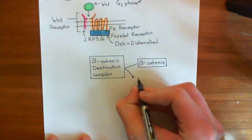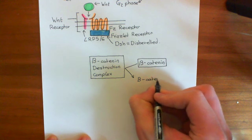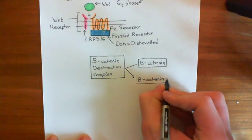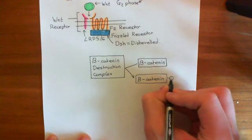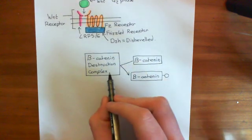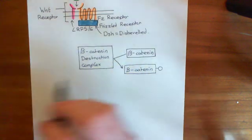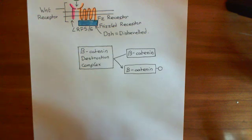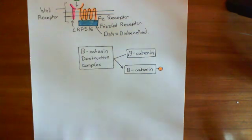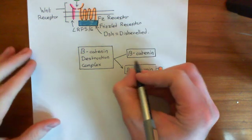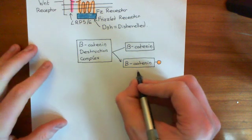It takes in beta-catenin and turns it into beta-catenin with some sort of reactive group on it. It puts something on, but it itself does not put the ubiquitin on. What happens is because it's added this extra group on, some other enzyme now adds ubiquitin onto that group.